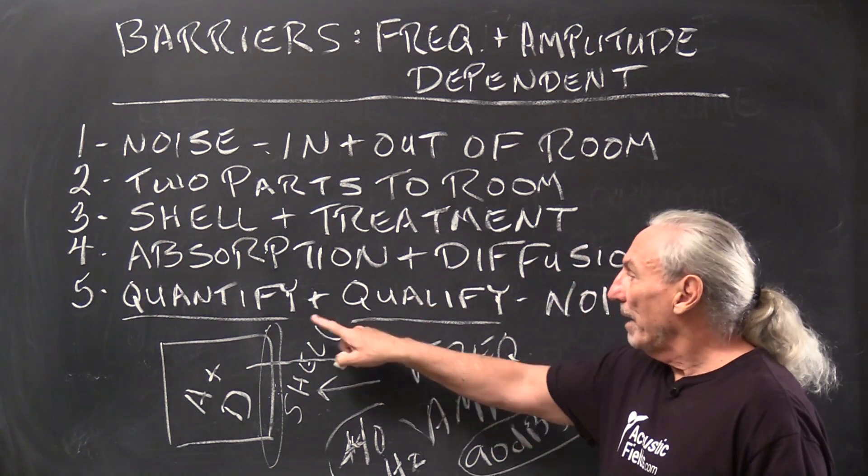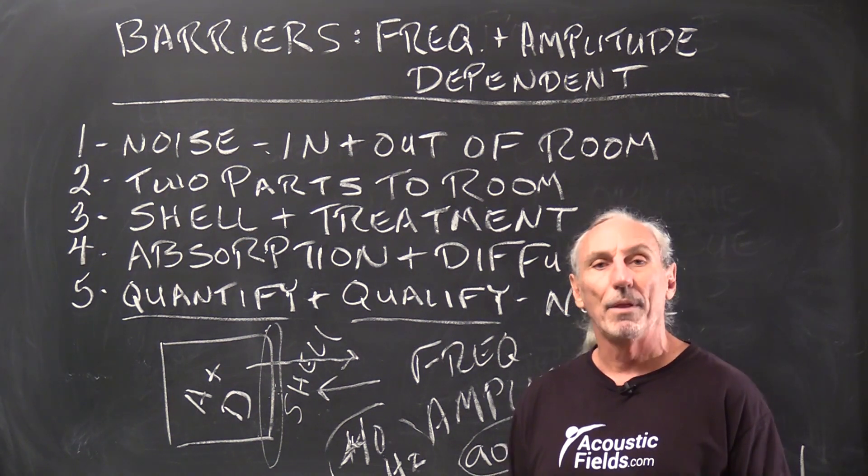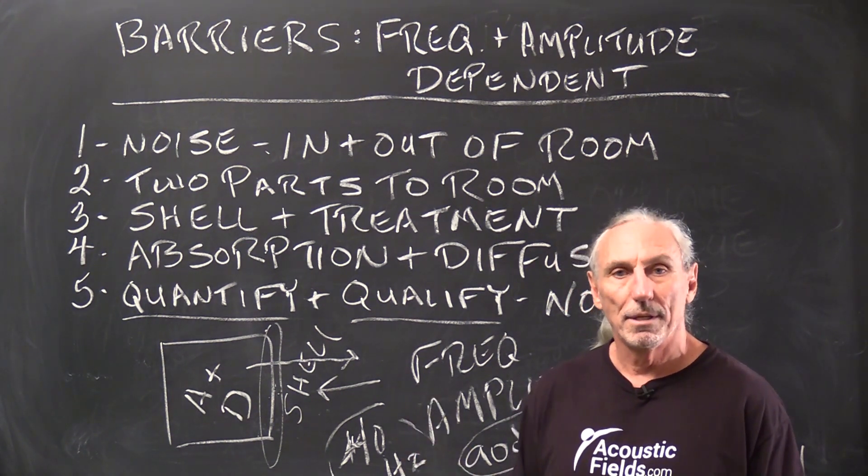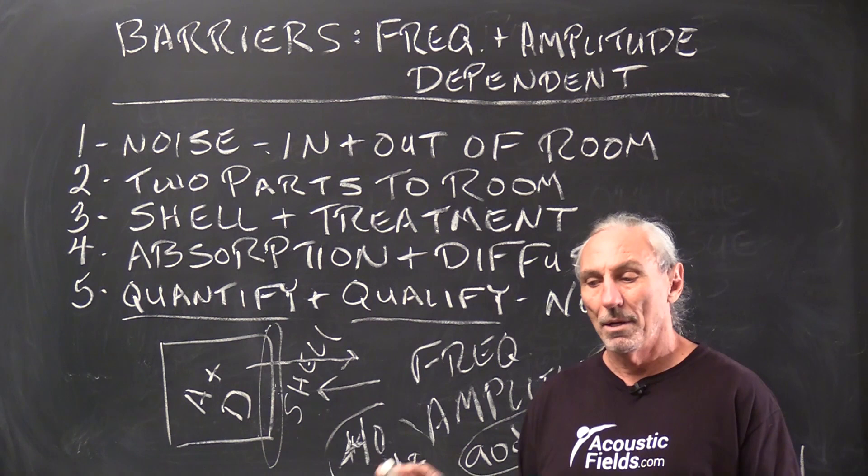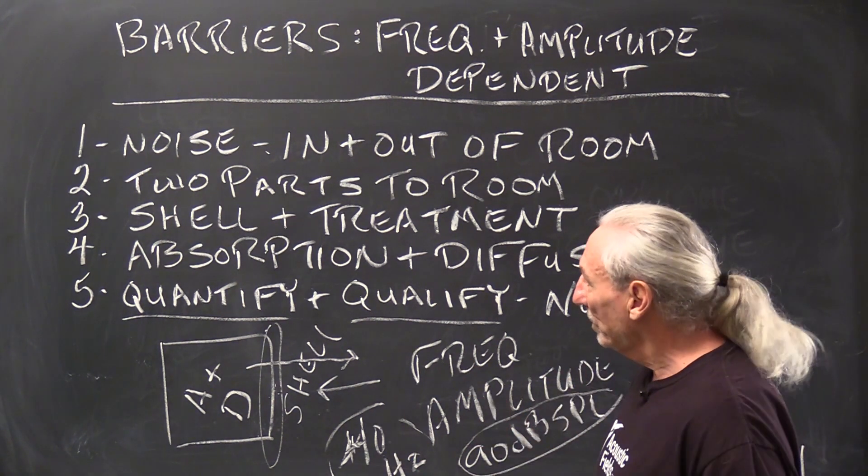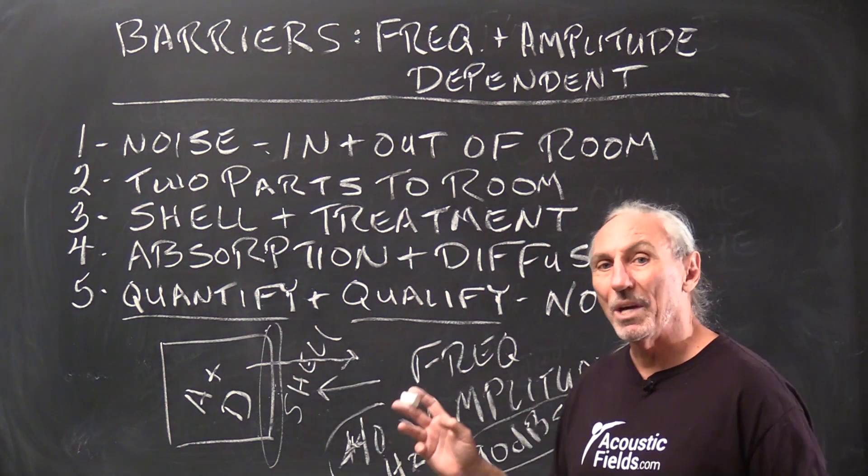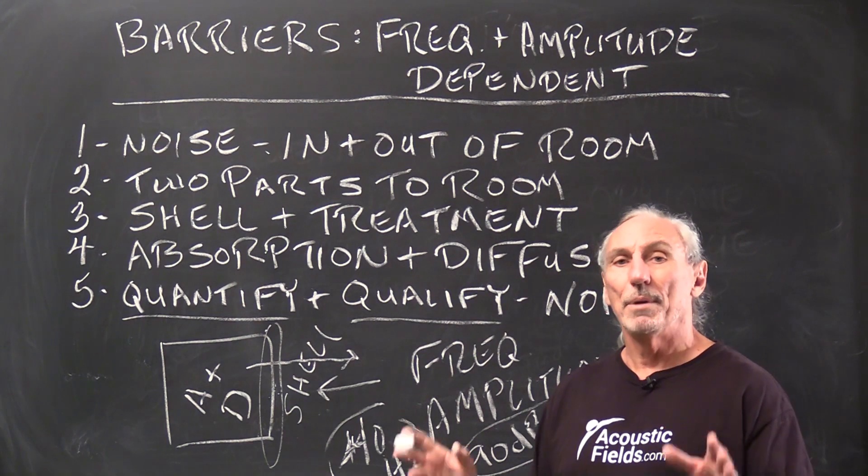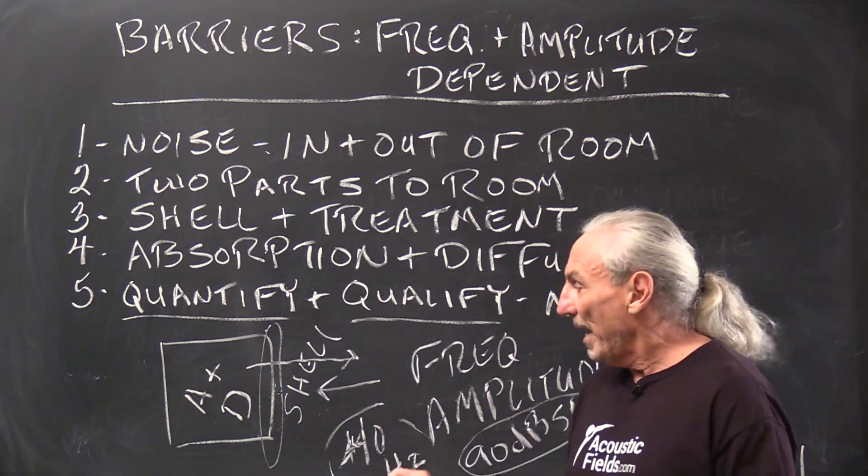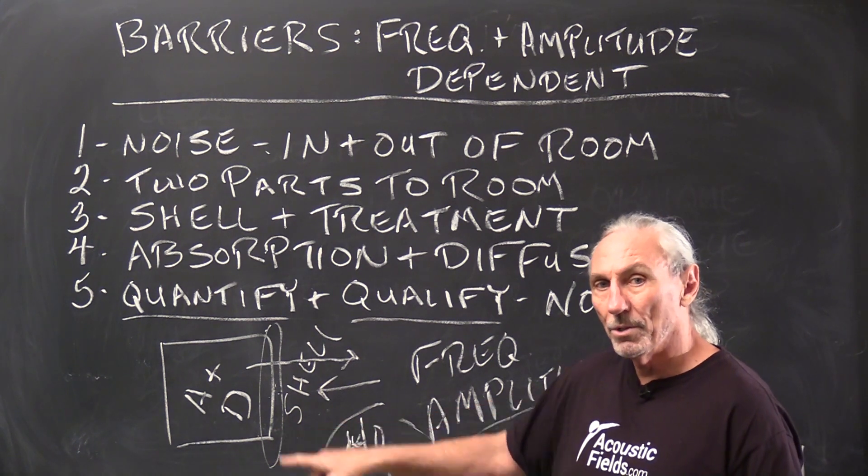So we always have to quantify and qualify. So people always call me and they say I hear this, I hear that, what do I need to do to stop this noise? And my first response always is quantify and qualify. We have to measure because the frequency and the amplitude have a direct dependency on what we're used to build.